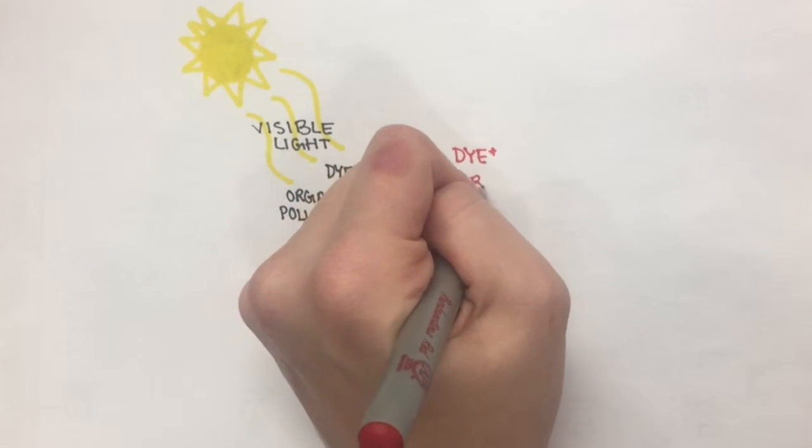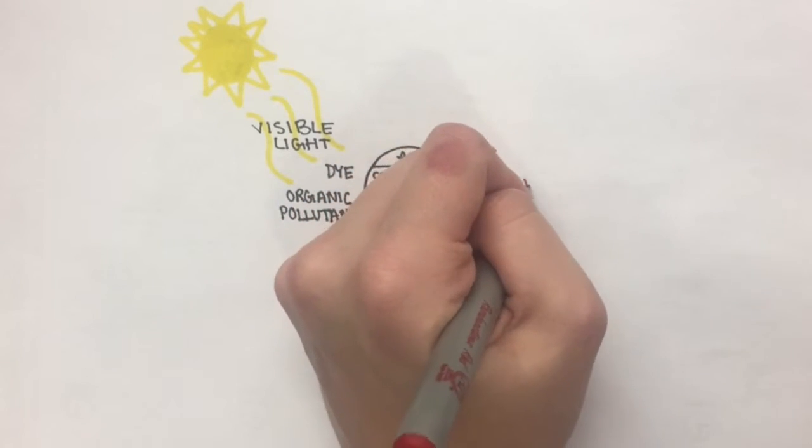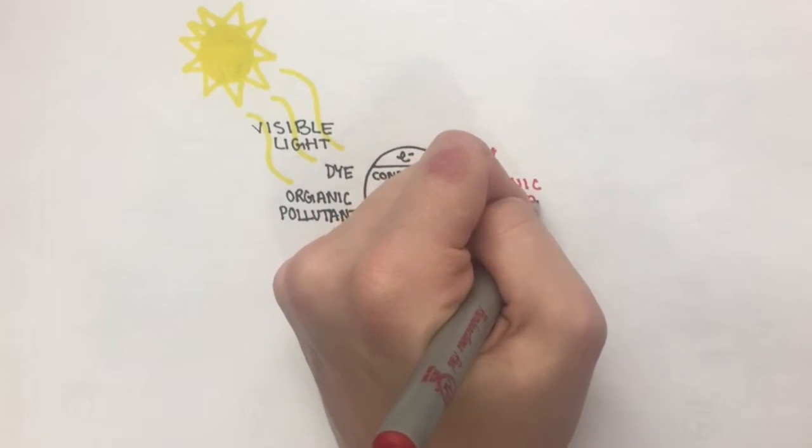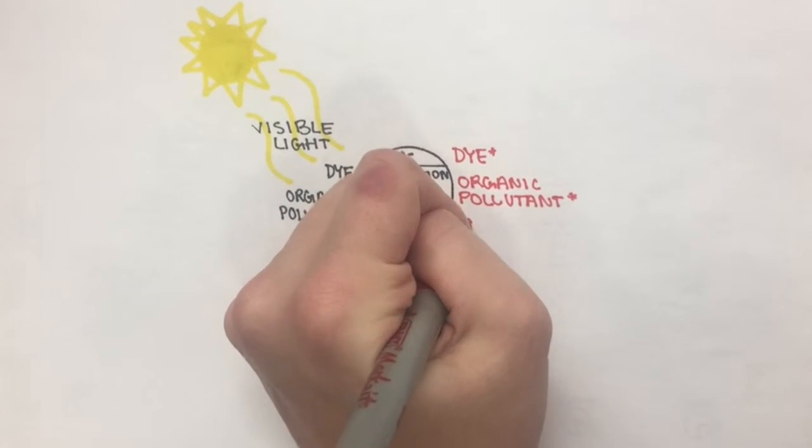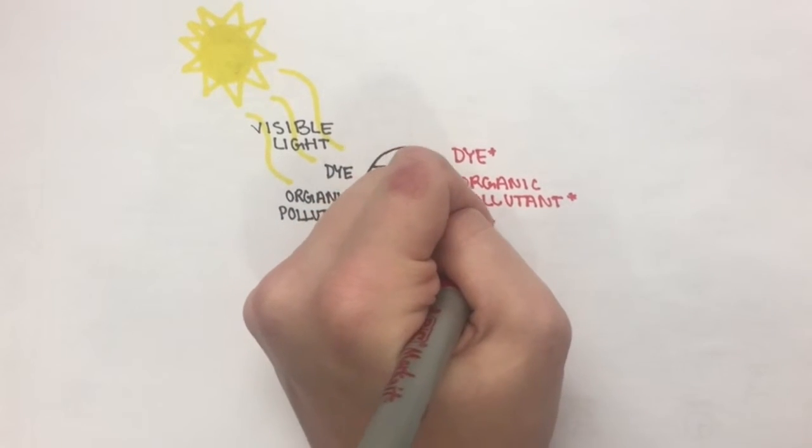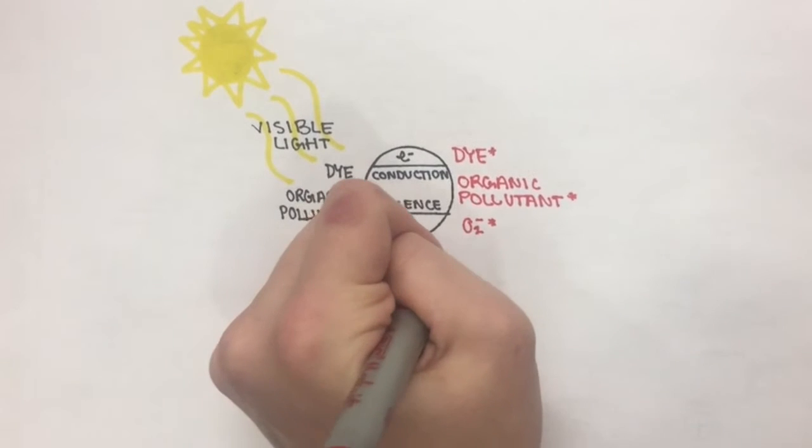This causes a formation of radical molecules of the pollutant dye. It is the formation of these radical molecules that brings the starting materials to a higher energy level and allows for this reaction to take place.